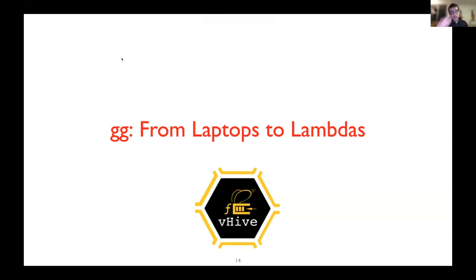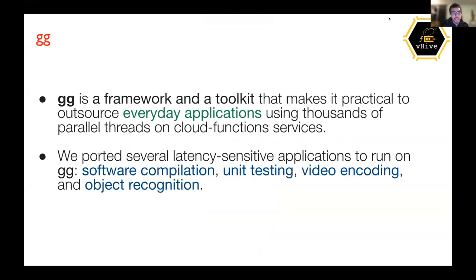Gigi is a framework and toolkit that makes it practical to outsource everyday applications using the thousands of parallel threads that cloud functions provide today. Examples include latency-sensitive applications such as software compilation, unit testing, video encoding, and object recognition. Gigi allows you to port really any application that can be expressed as a DAG.